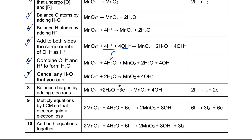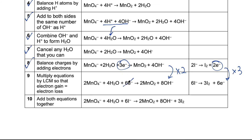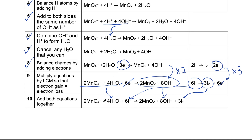Now we add electrons to balance the charges. On the left I have minus 1, on the right I have minus 4, so I add 3 electrons on the left so that both sides have a charge of minus 4. For the oxidation half equation I add 2 electrons to balance the charges. The common multiple for 3 and 2 electrons is 6, so I multiply the reduction equation by 2 and the oxidation equation by 3. We cancel the electrons and combine everything to get the final balanced equation for this alkaline redox reaction.